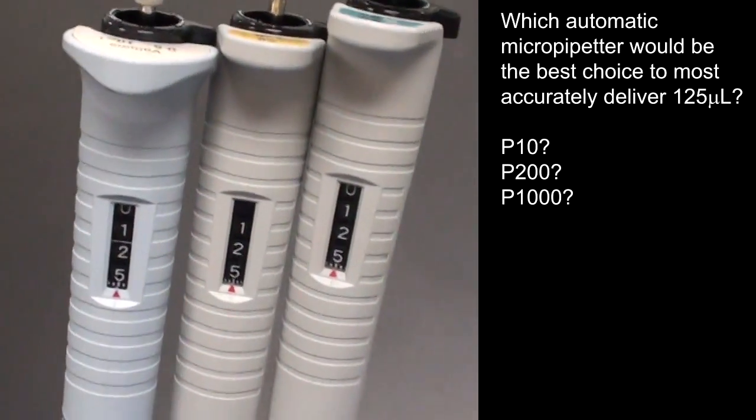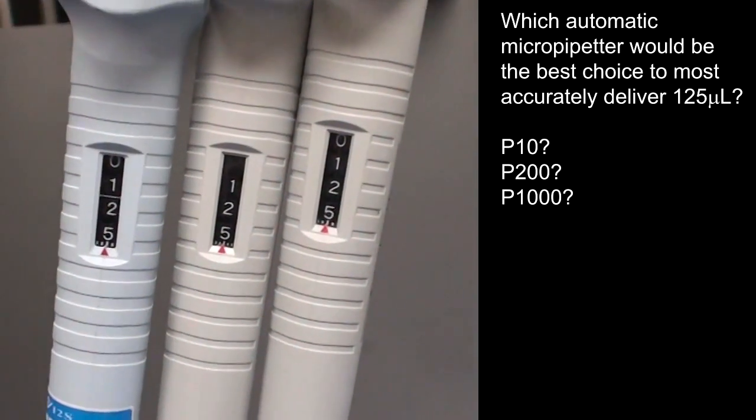Which automatic micropipettor would be the best choice to most accurately deliver 125 microliters?